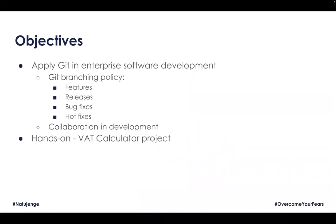We want to see how we apply Git in enterprise software development, and we'll tackle a few things on Git branching policy. We'll talk about features, releases, bug fixes, and hot fixes in the context of Git and collaboration. We'll do a hands-on training. Yesterday we attempted to make the exercise more collaborative but because of time, I'll go through what I have and highlight where each person would have taken responsibilities.